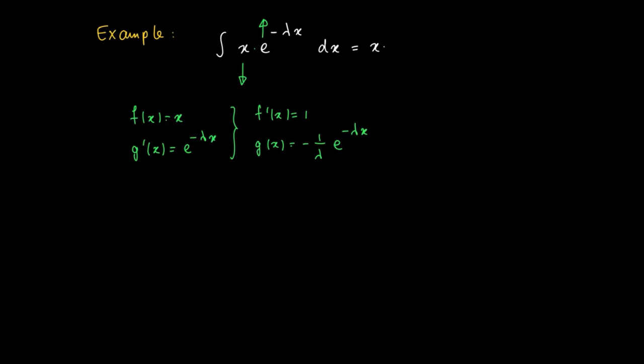So as a first instance, we get f times g, which in this case is x times minus 1 over lambda times the exponential function e to the power minus lambda x, minus the integral of f' times g, which is minus 1 over lambda e to the power minus lambda x. So your remainder integral is significantly easier to solve.